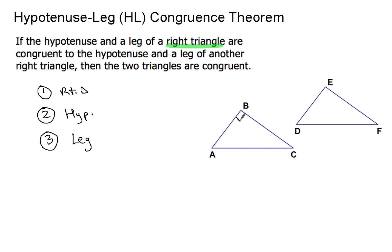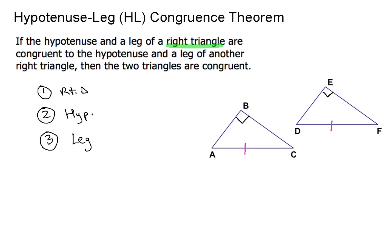So those are the three conditions that have to be met in order to use hypotenuse-leg. I'm going to draw a right angle in angle B and angle E. The hypotenuse is the side across from the right angle — in this case AC and DF. This theorem sometimes gets confused with side-angle-side, because people see two congruent sides and say 'oh, it must be SAS.' So you really want to be careful to make sure you don't fall for that.